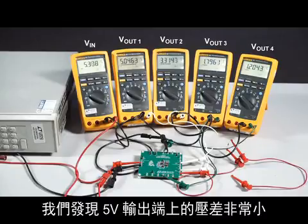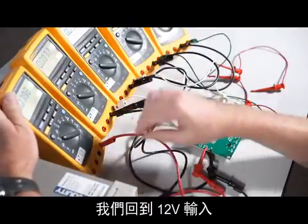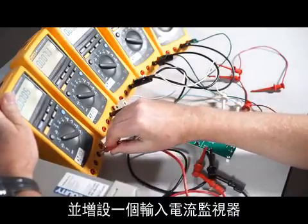Ramping the input down, we see that the dropout on the 5 volt output is very small. Let's go back to 12 volts and add an input current monitor.